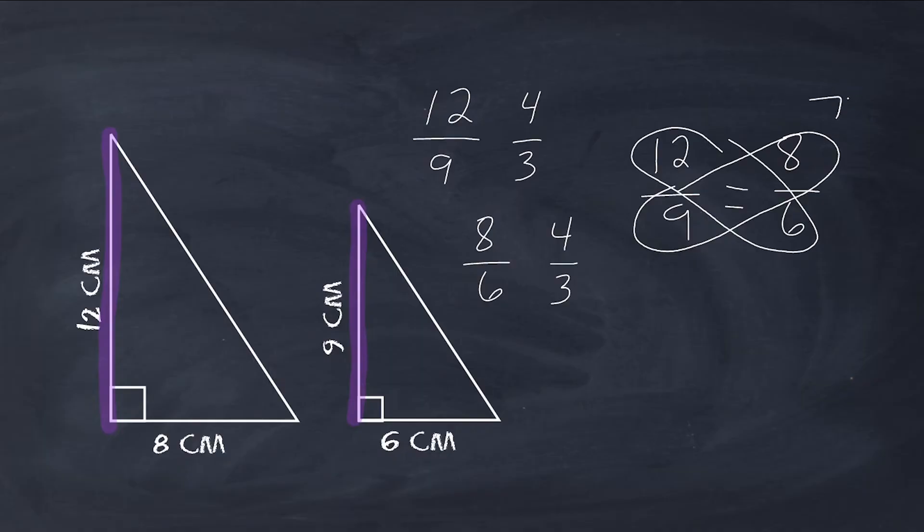And if we come up with the same product, then we know we are dealing with similar figures. Well, 9 times 8 is 72, and 6 times 12 is also 72. So that is another way that you can determine whether or not the shapes are similar to each other.